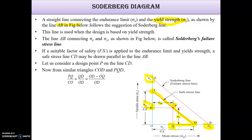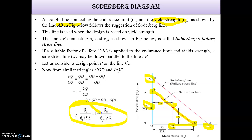Triangles COD and PQD are similar triangles, so PQ/CO = QD/OD. Here QD = OD minus OQ. Substituting, PQ is Sigma V and OQ is Sigma M. This gives the Soderberg equation: Sigma V divided by (Sigma E / factor of safety) equals 1 minus Sigma M divided by (Sigma Y / factor of safety).